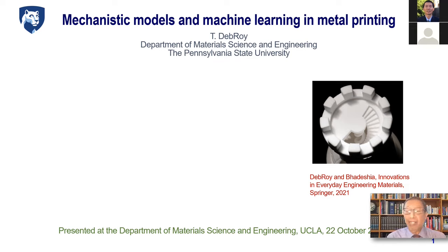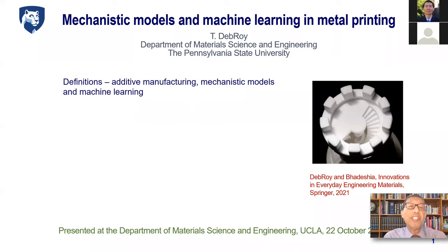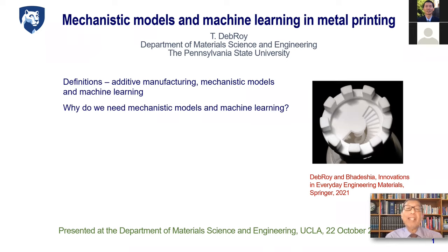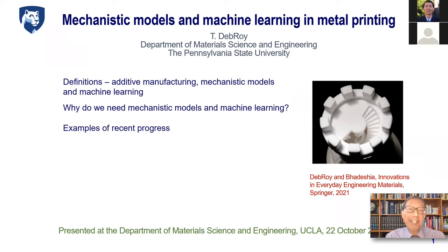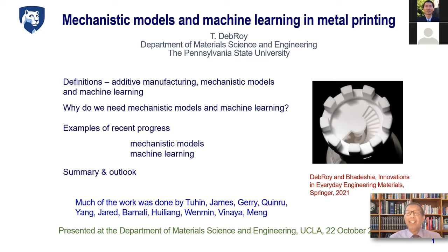The outline is simple. We want to define additive manufacturing, mechanistic models, and machine learning so that all of us are on the same page about what we are discussing. Then the basic questions — why we cannot do without mechanistic models and machine learning — and examples of recent progress in both fields, and then a summary of what this all means and what is in store based on evidence collected over many years.